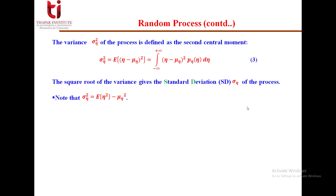We can also state that σ_n² = E[η²] − (E[η])², where E[η²] is the second moment and E[η] is the first moment. When the mean of a random process is zero, this simplifies to σ_n² = E[η²].